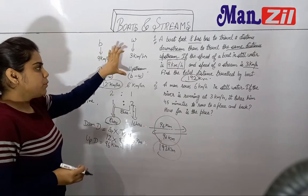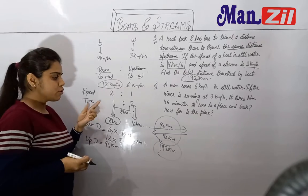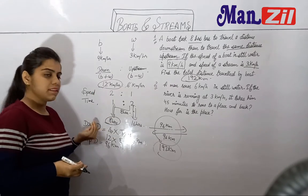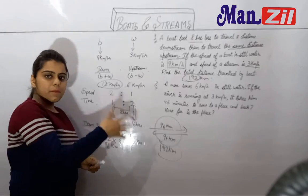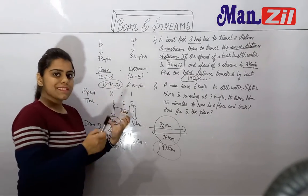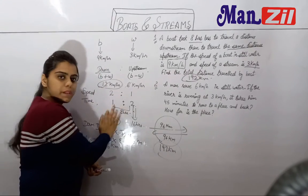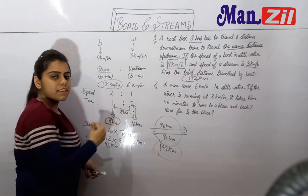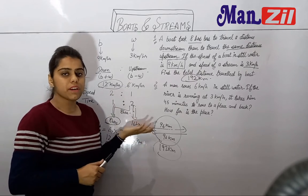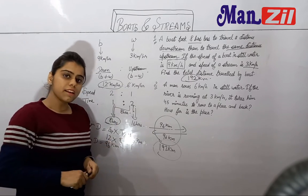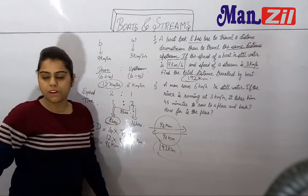Clear? We used B and W to find downstream and upstream speeds, found the ratio from there, used it to get the time values, and then directly applied distance equals speed into time. It looks long because I explained each step clearly, but once you set up just 2 ratios the values come quickly — it takes just 30 seconds, rather than converting to equations and solving.